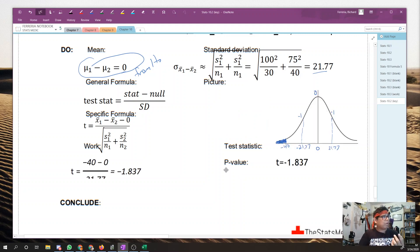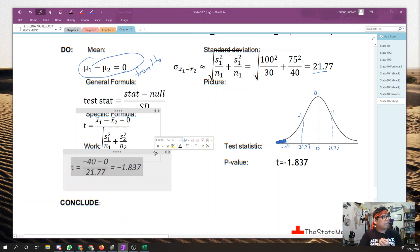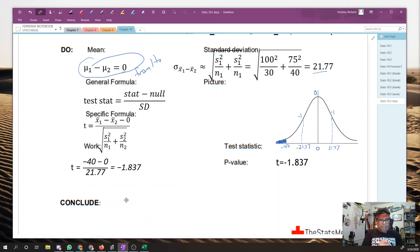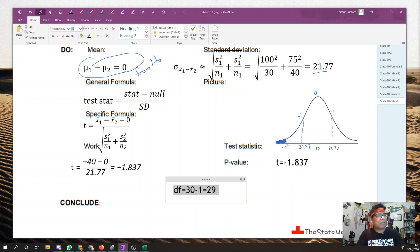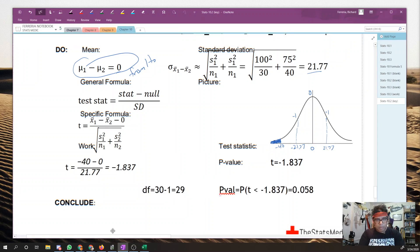Here is our specific formula, our work, and that gets us to a t-score, a test statistic of negative 1.837. How many degrees of freedom are we going to have? Well, the smallest sample is 30, so 30 minus 1 is 29. That's going to be our degrees of freedom. Let's write that right over here. Here, df is going to be equal to 30 minus 1, or 29. Your last task here is to figure out your p-value. So go ahead and take a minute to do that. P-value.